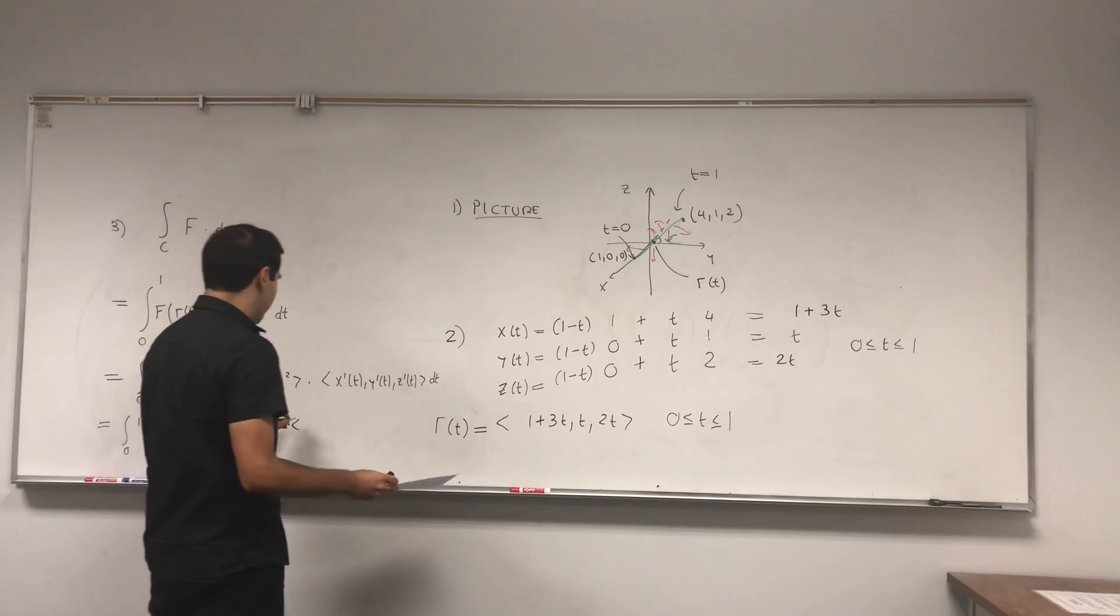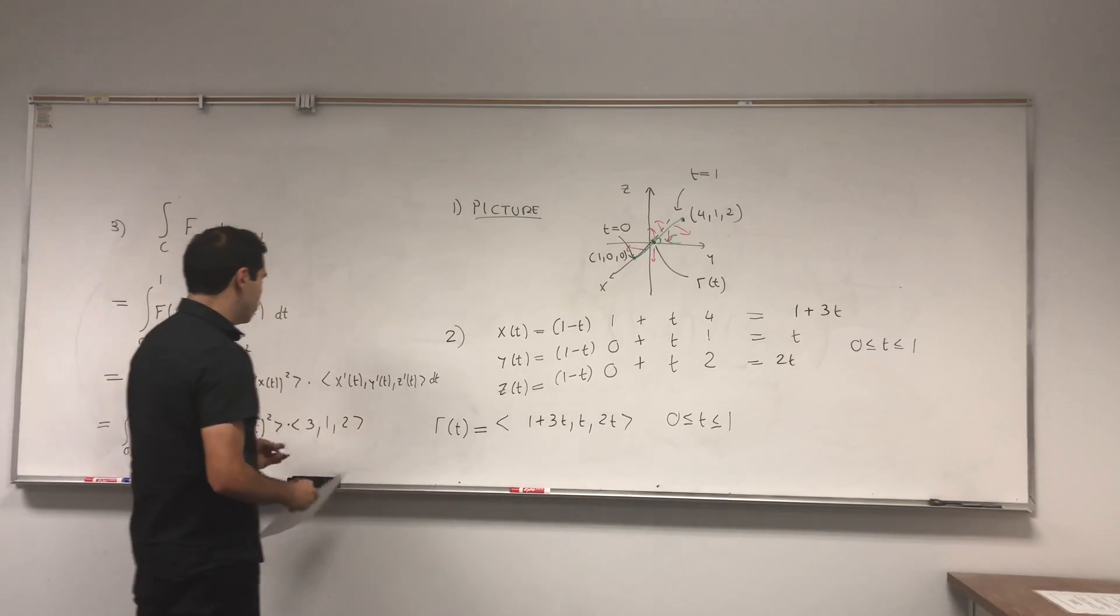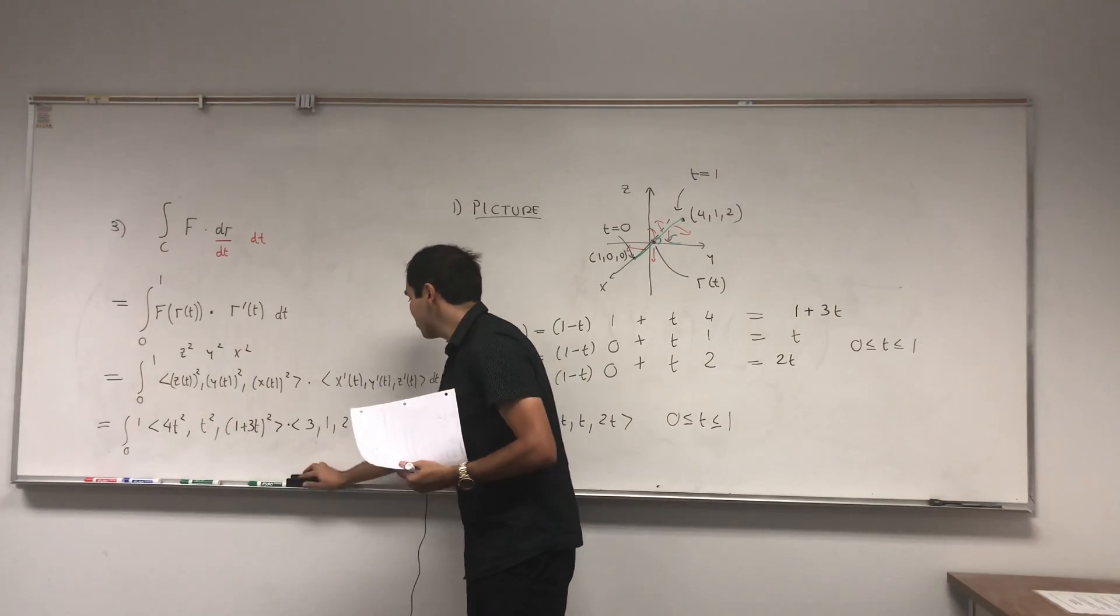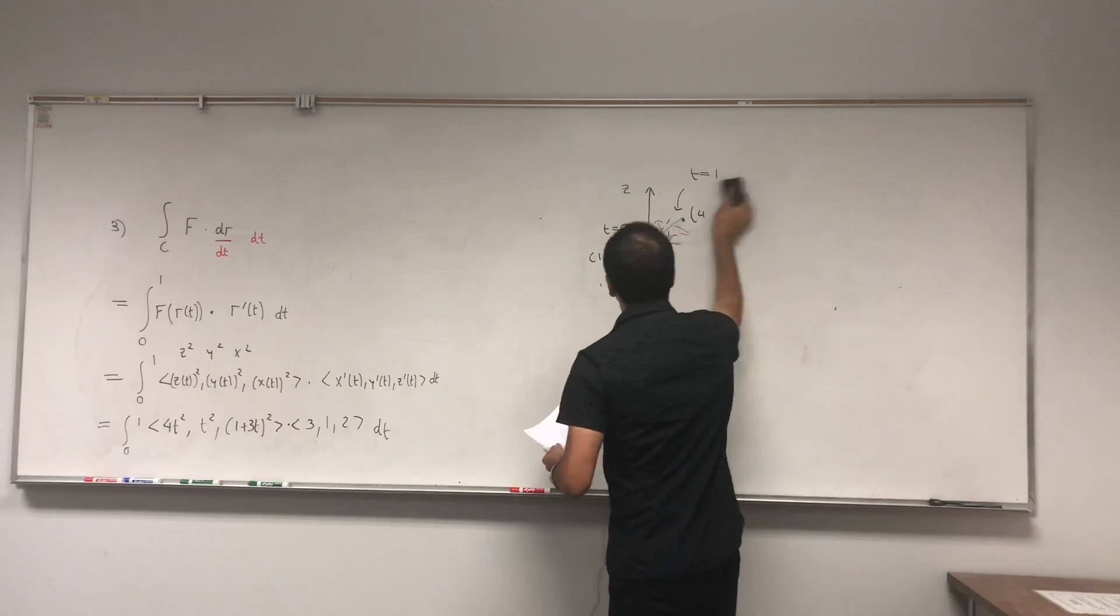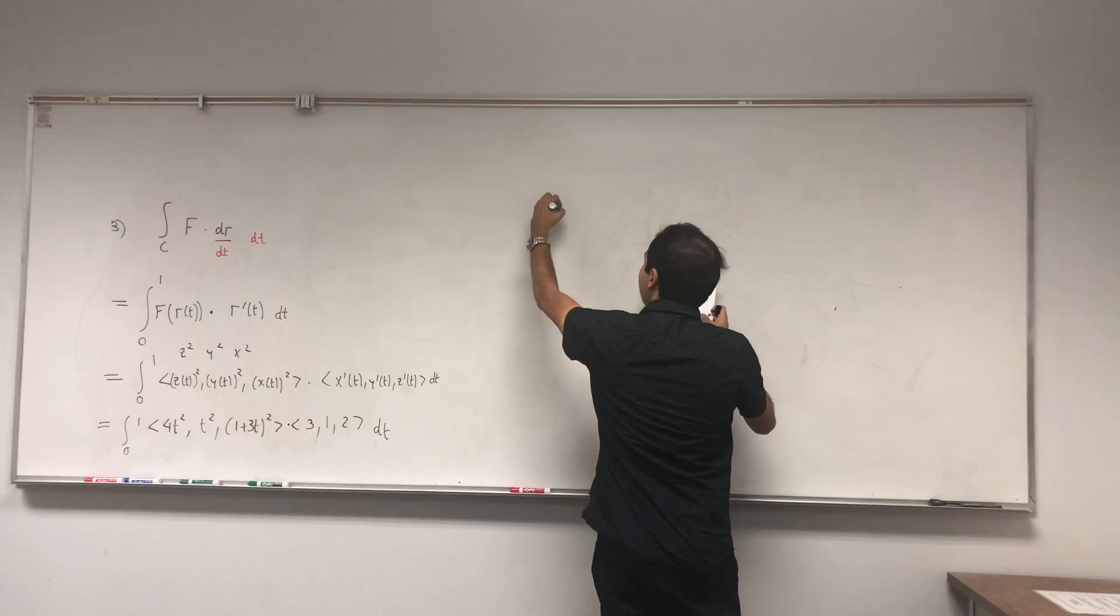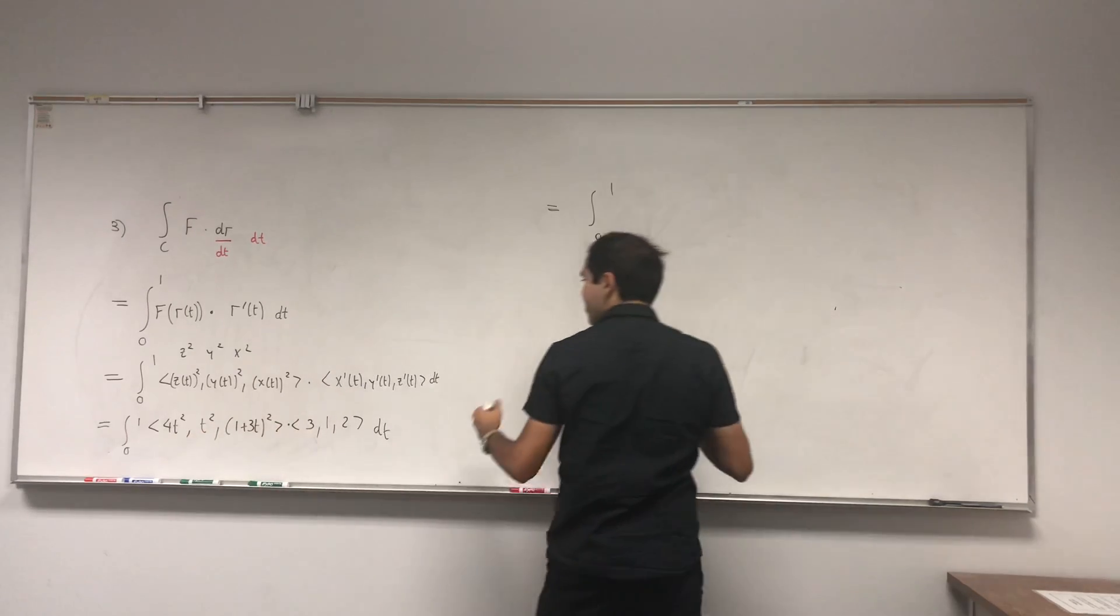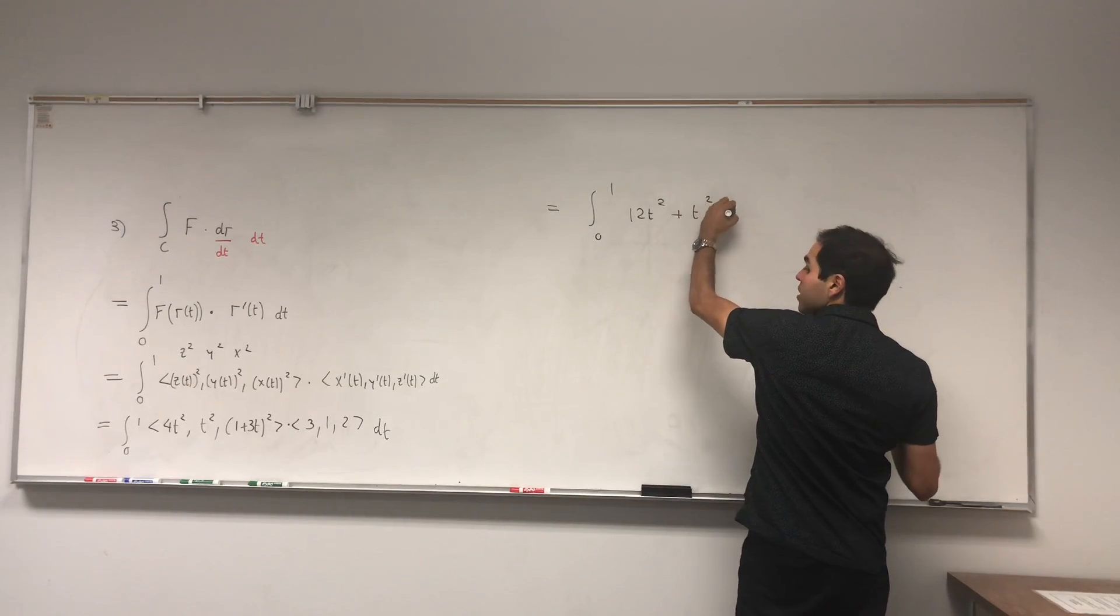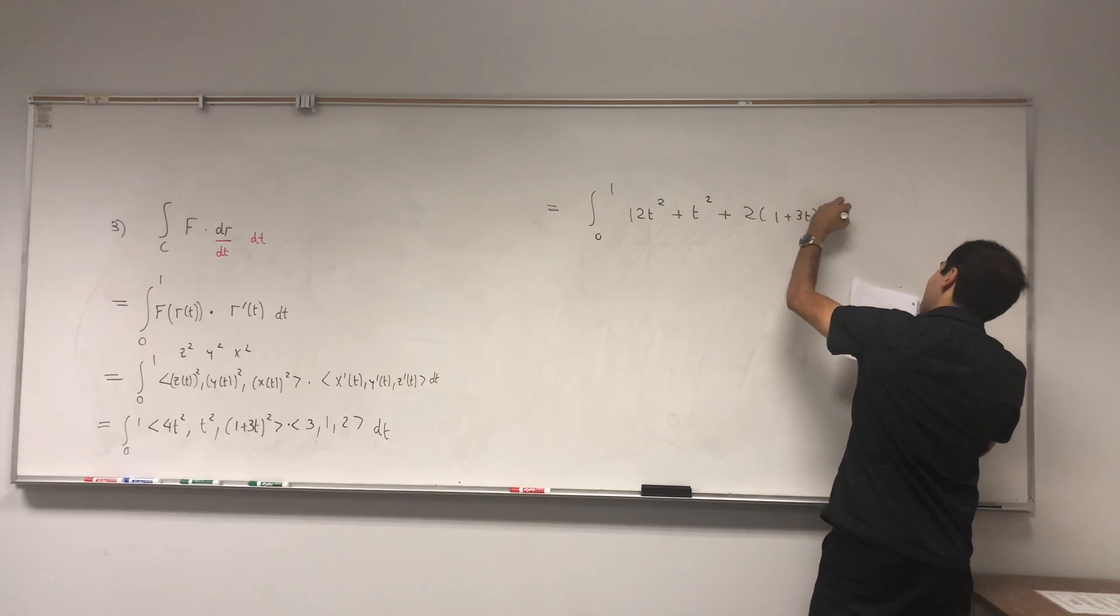And you dot it with all the derivatives. So the derivative of 1 + 3t is 3. The derivative of t is 1. The derivative of 2t is 2, dt. And in general, you can have different values. And the point is, yes, you had vectors, but because of the dot product, you just have a number. And basically, you just end up integrating a number. So it's integral from 0 to 1. 4t squared times 3, which is 12t squared, plus t squared times 1, which is t squared, plus 2 times (1 + 3t) squared. That's 2 times (1 + 3t) squared, dt.